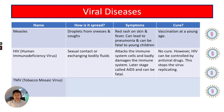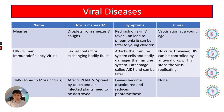TMV, or tobacco mosaic virus, affects plants and is spread by touch or air. The leaves become discoloured, which reduces photosynthesis and therefore reduces growth — with no photosynthesis there's no glucose for respiration. There is no cure; infected plants must be destroyed.